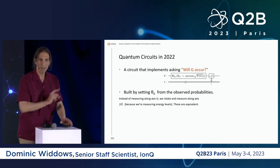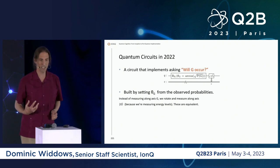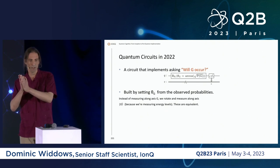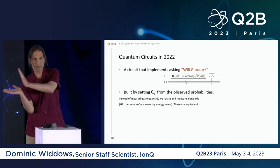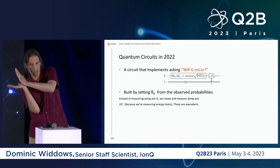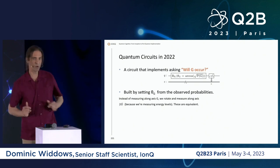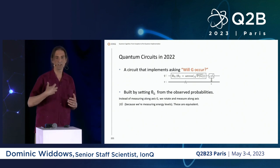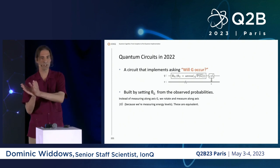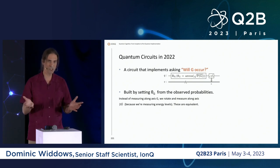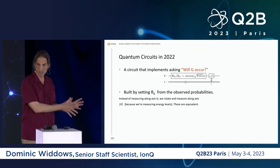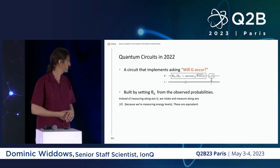One caveat: in practice on a quantum computer, we don't start on the zero axis and measure along the Gore axis. Instead, we do the rotation from the zero axis to the Gore axis and then measure along the zero axis — which is mathematically equivalent. The difference is that we're really measuring whether the qubit is in the ground state or the excited state, so there's a small difference between how we describe the theory and how we actually build it.